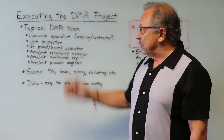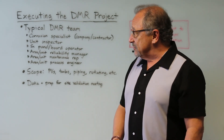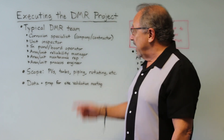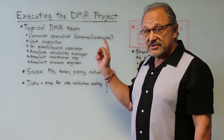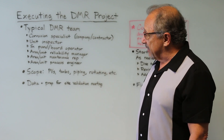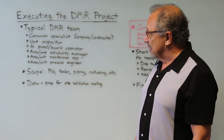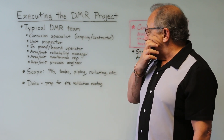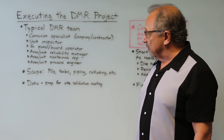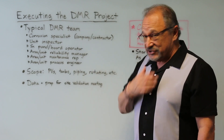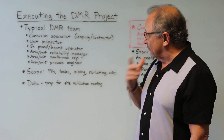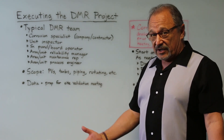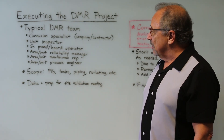Let's start with the typical damage mechanisms review team. We need to have a corrosion specialist — someone experienced in the type of unit that the damage mechanisms review is being done for. It might include a contractor as well. In fact, a lot of times the contractor will take the lead because the company corrosion specialist is busy, but they'll be sitting in on the meeting. Another key member is the unit inspector, who has a lot of knowledge about the issues around the unit.